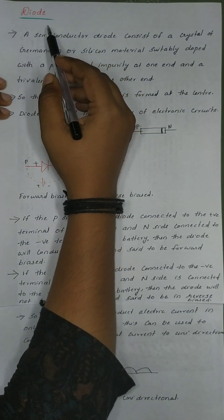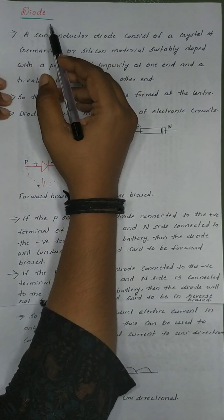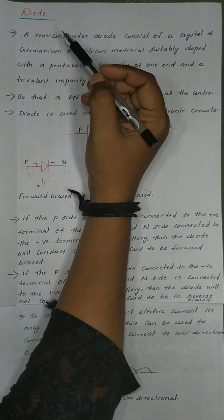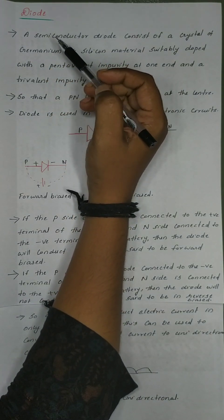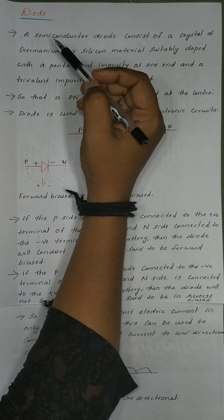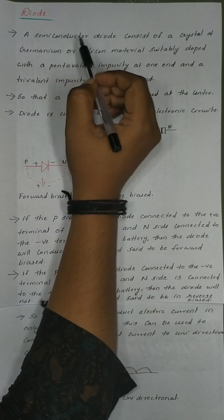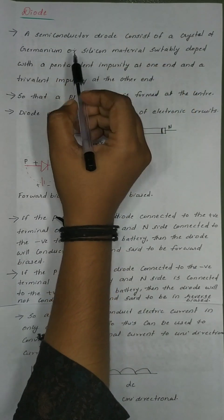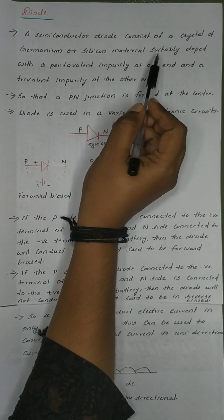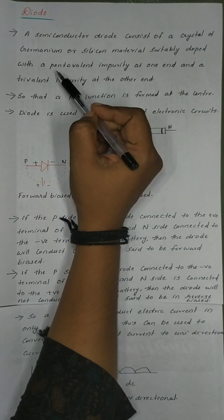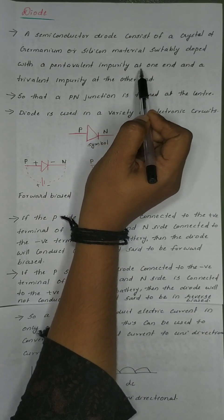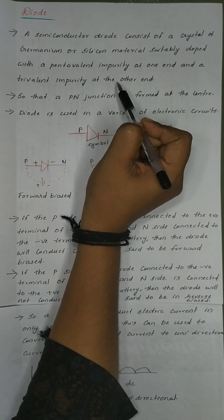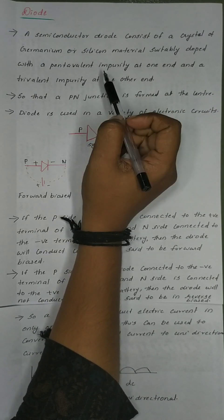Our next topic is Diode. What is a semiconductor diode? This semiconductor diode consists of a crystal of germanium or silicon material, suitably doped with a pentavalent impurity at one end and a trivalent impurity at the other end.